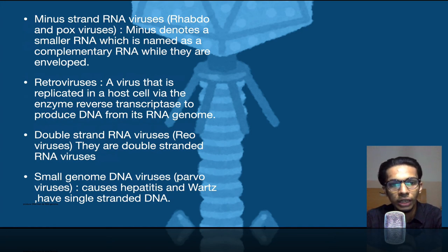The previous RNA viruses hijack the system of translation using ribosomes. Translation occurs with ribosomes, not transcription - transcription occurs inside the nucleus. Double strand RNA viruses have double stranded structure. Reoviruses are the example of double stranded RNA viruses. Then come small genome DNA viruses.